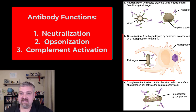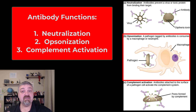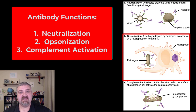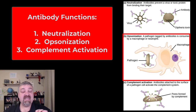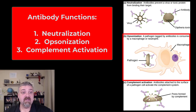Next you see opsonization. Anything that's going to tag something so that a macrophage — a big eater — can find it and engulf it is opsonization. Some antibodies' job is to actually tag pathogens, like a strobe light saying 'come and eat this target.' That's opsonization.